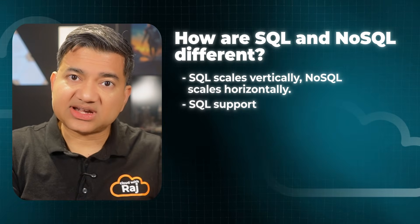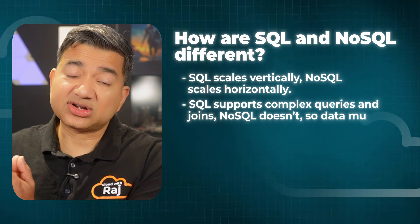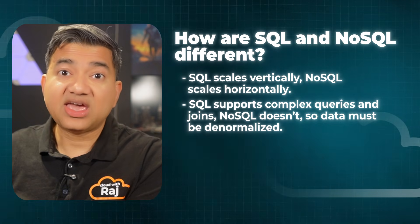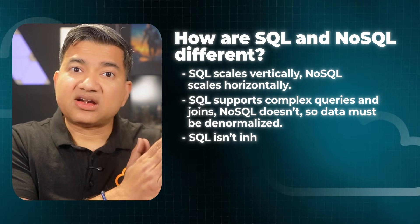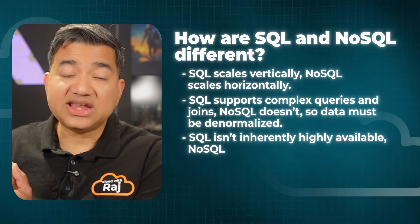Next, talk about how SQL databases can support complex queries and joins, while NoSQL databases cannot support complex queries and joins — the data needs to be denormalized, meaning all the necessary information should be in the same NoSQL table. Next, SQL databases are inherently not highly available; however, NoSQL databases are inherently highly available — even in the unlikely event of an availability zone going down, your NoSQL database will still be up and running. With SQL databases, you are responsible for making them highly available.